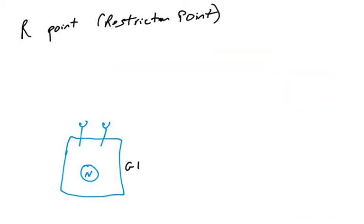What we've just seen is the cell passing through what is called the R point of the cell cycle, also known as the restriction point. Here I've drawn a cell in G1 — a cell with a nucleus and two growth factor receptors on its surface. The R point is the point of no return: the point where the cell has committed to going into S phase.